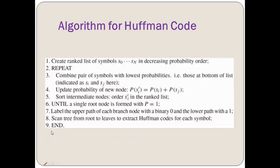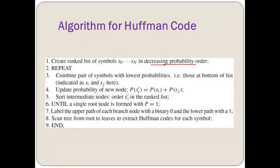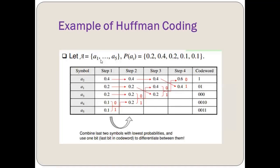The algorithm says: first, we need to get the list of symbols in decreasing probability order. In the question, we are given the probability for each symbol and we rank them in descending order. The example has A = {A1, A2, A3, A4, A5} with probabilities P(A1)=0.2, P(A2)=0.4, P(A3)=0.2, P(A4)=0.1, and P(A5)=0.1.